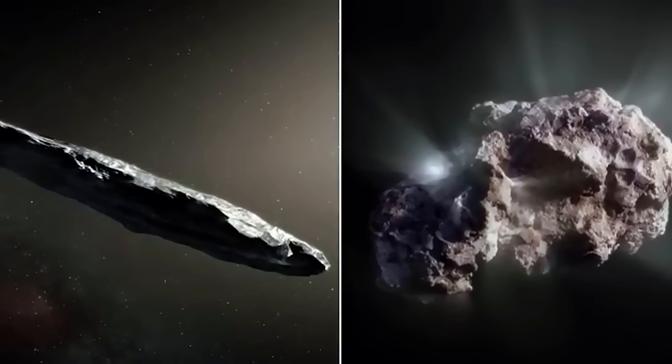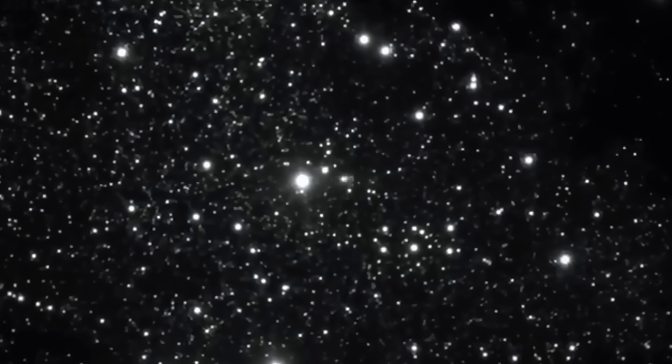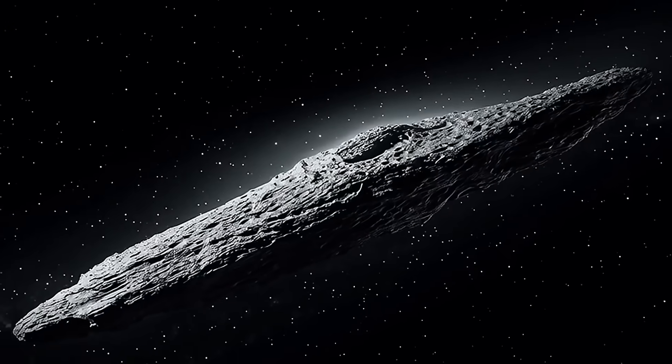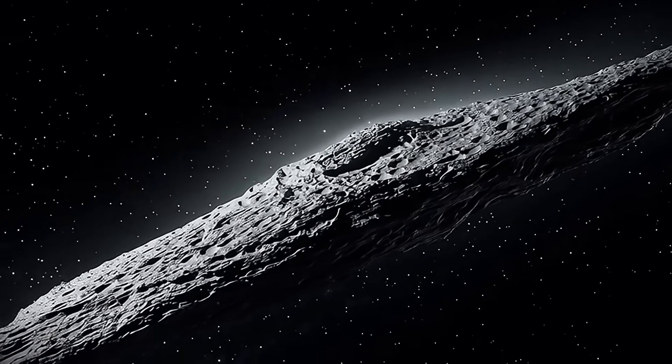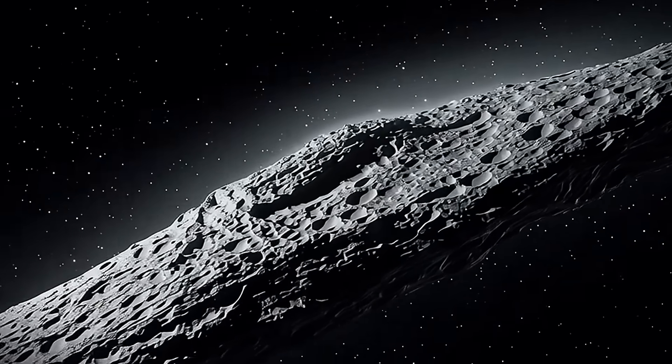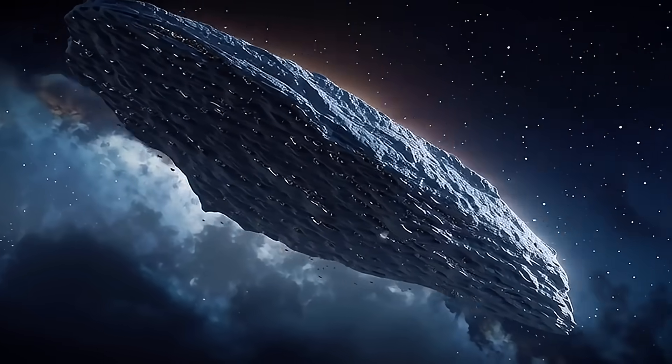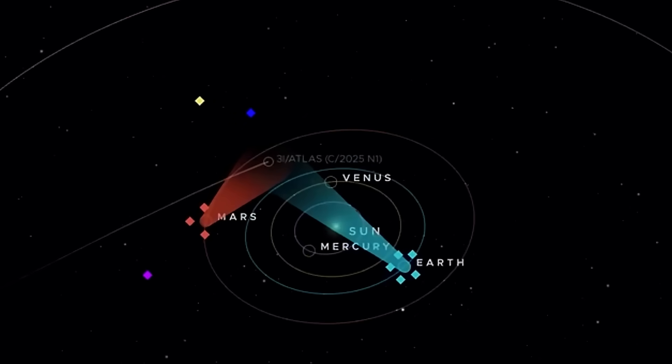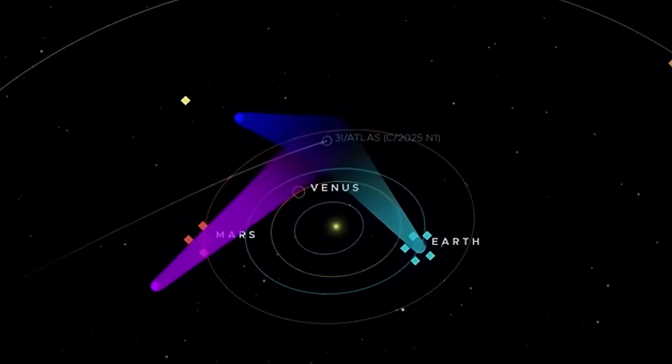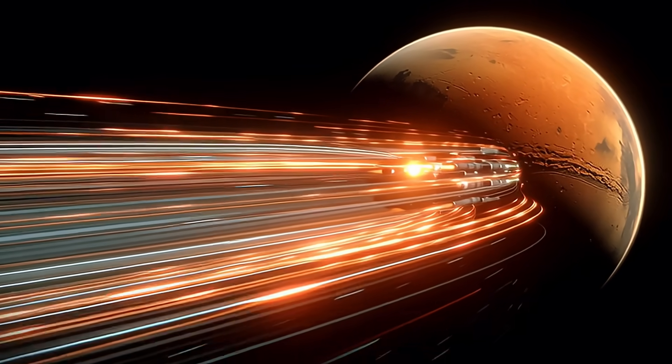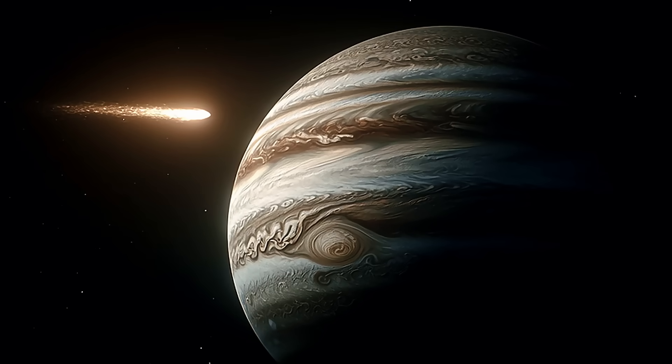The temporal precision of this sequence of planetary approaches is mathematically almost impossible for a natural object. Additionally, being hidden from Earth during the most critical observation moment seems too convenient to be coincidence. It's as if the object had planned a route that maximized planetary exploration while minimizing terrestrial detection.